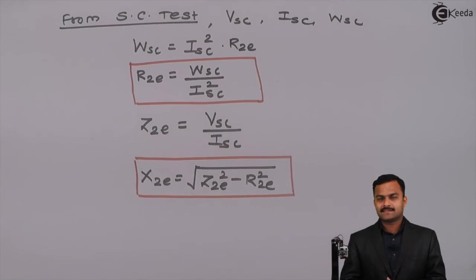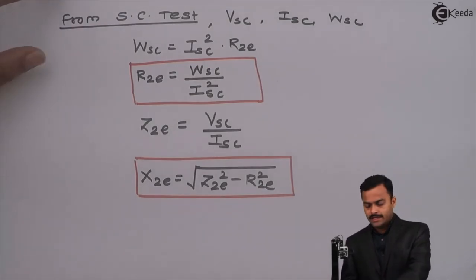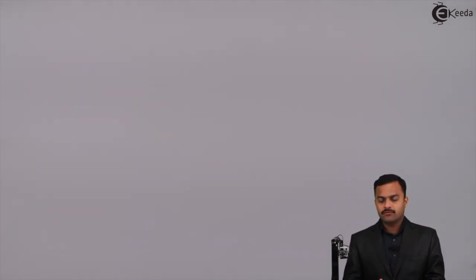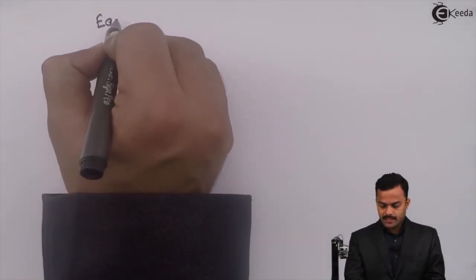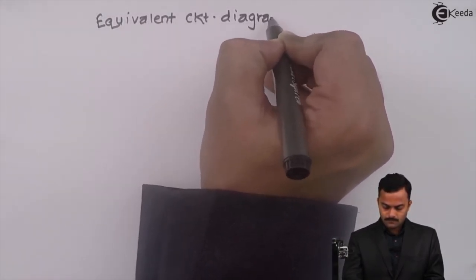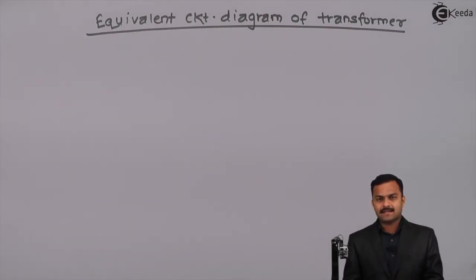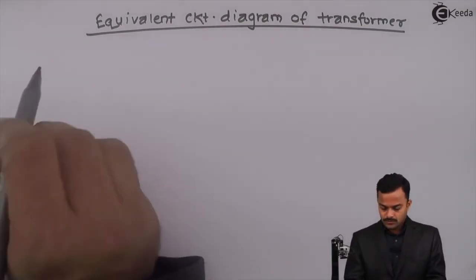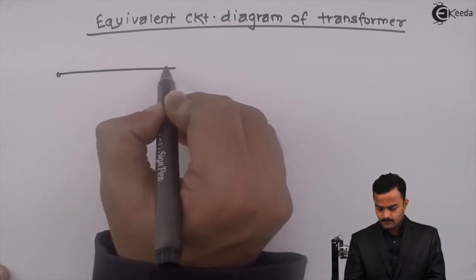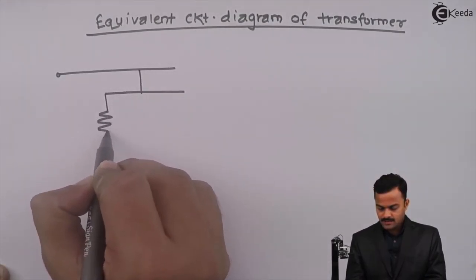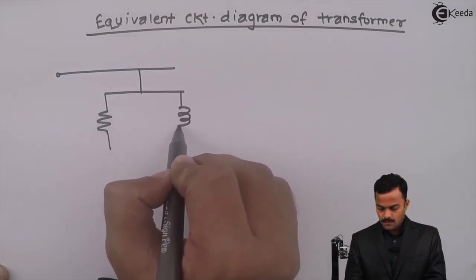The outcome of the short circuit test is getting the winding parameters referred to one side. Considering both tests together: for a step-up transformer, the low voltage side is the primary where we perform the OC test and obtain RC and Xm. The primary side voltage is V1.